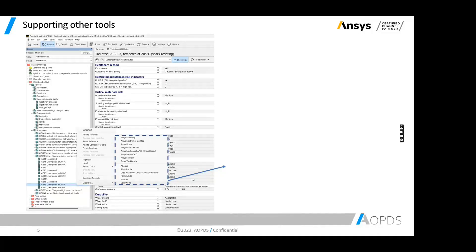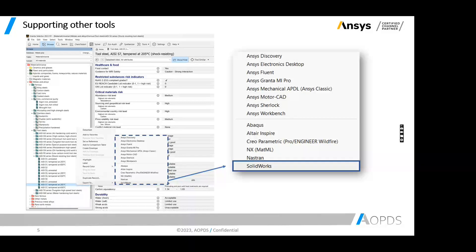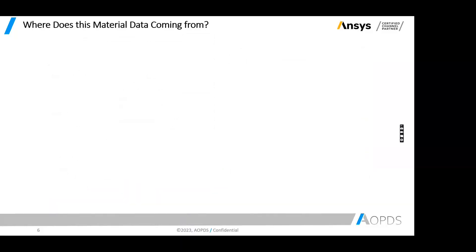Granta is not only targeting analysts — it targets any engineer or person involved in the product development process, whether you're a designer, analyst, or manufacturing engineer. There are different CAD and analysis tools you can export your material database to. For example, you can simply right-click on a material like AISI S7 tool steel, select Export, and bring that material data into any CAD or analysis tool.